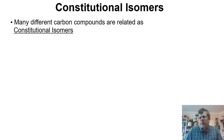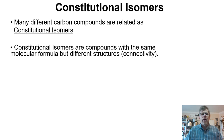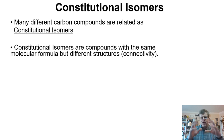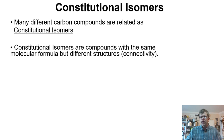We can have two different single-bonded hydrocarbons that are related somehow. Many different carbon compounds can be related as constitutional isomers — the definition of which are compounds with the same molecular formula (in the case of alkanes, the same CH formula), but different structures, meaning different carbon connectivity.